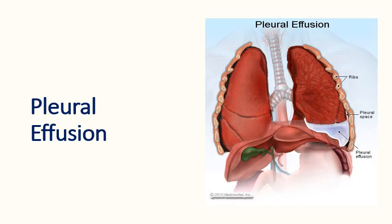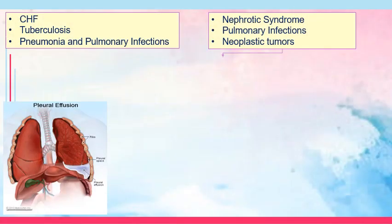The next disorder is pleural effusion. When we say pleural effusion, there is collection of fluid in the pleural space. Earlier in pleuritis, there was only inflammation; in pleural effusion, there is already a collection of fluid. The normal amount of fluid in the pleural space is 5 to 15 ml and it acts as lubricant. However, in some pathologic conditions there is a tendency for this fluid to be in excess, leading to pleural effusion.